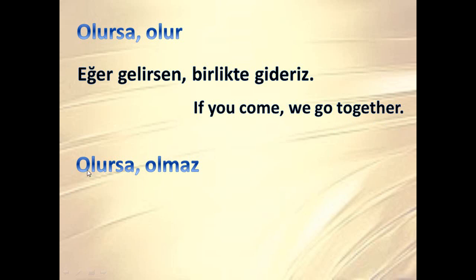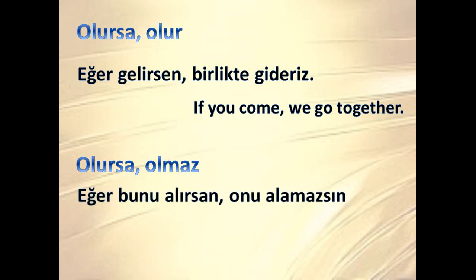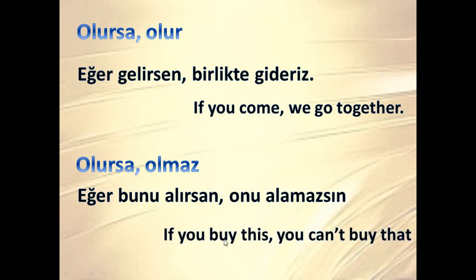Then we have olursa olmaz. This structure has an example like this: Biz eğer bunu alırsan, onu alamazsın — which means if you buy this, you can't buy that. So if this possibility happens, this possibility will not happen.